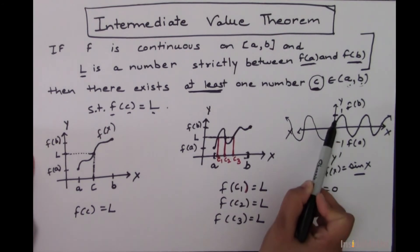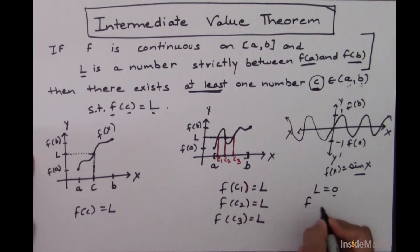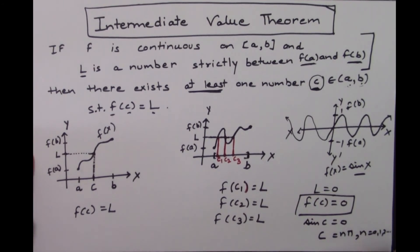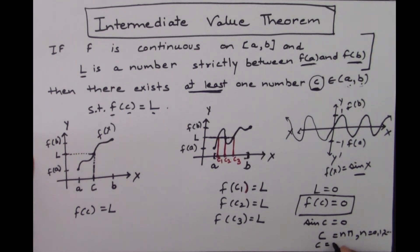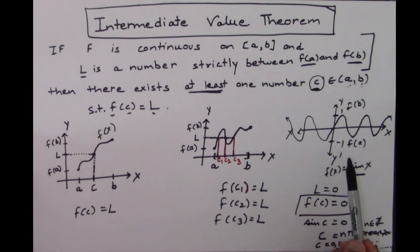Let me take L equals 0, because it is strictly between minus 1 and 1. Then for this L = 0, there must exist at least one c. In this case, f of c equals 0 means sin(x) equals 0, so c will be equal to n·pi where n belongs to the integers — that means there are multiple values: 0, pi, 2pi, 3pi, and so on, as well as negative pi, negative 2pi, negative 3pi, and so on. So in this case there are infinitely many c's.